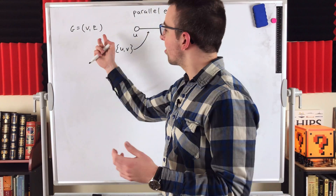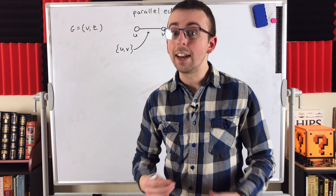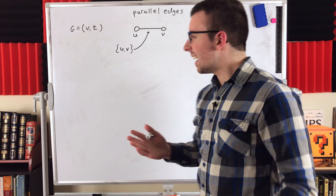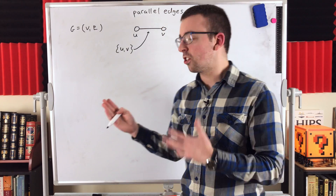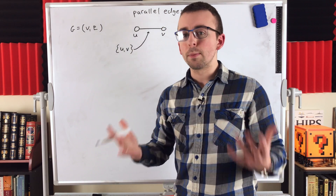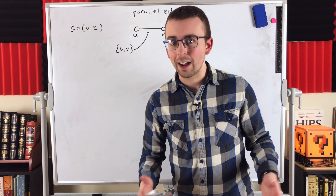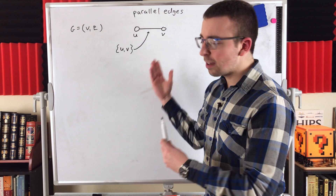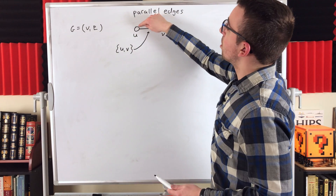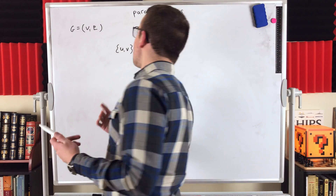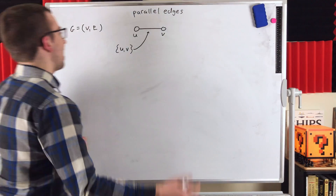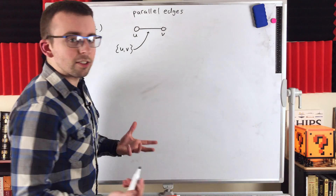Since the edge set is a set, and sets don't allow for repetition, in what's called a simple graph — which is the graphs we have been talking about, and what people often just call graphs — we can't have multiple edges joining the same pair of vertices. There's no way to represent that in your typical edge set.